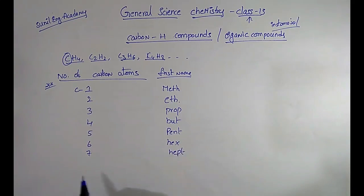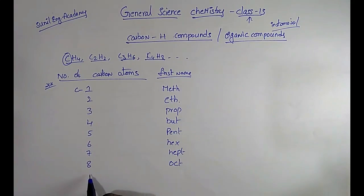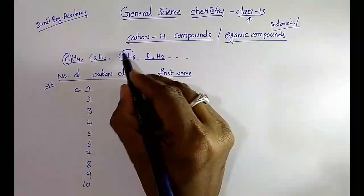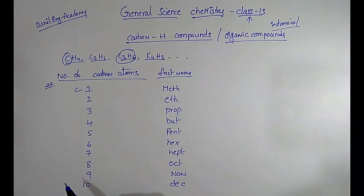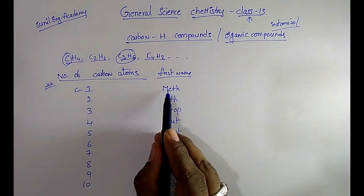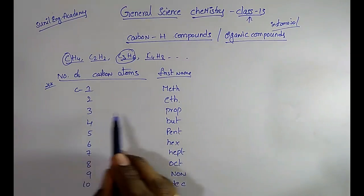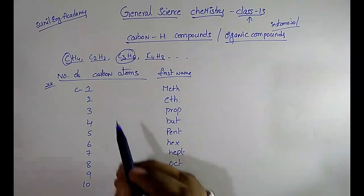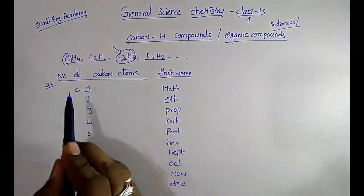Seven is 'hept'. Eight is 'oct'. Nine means 'non'. Ten means 'dec'. So to summarize: one = meth, two = eth, three = prop, four = but, five = pent, six = hex, seven = hept, eight = oct, nine = non, ten = dec.